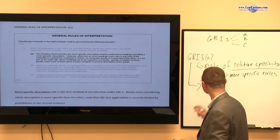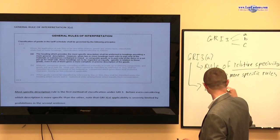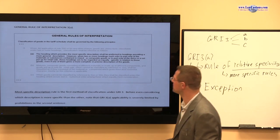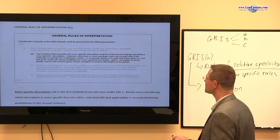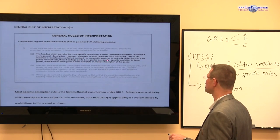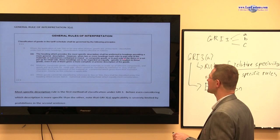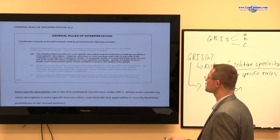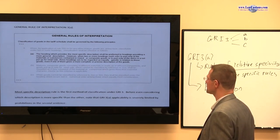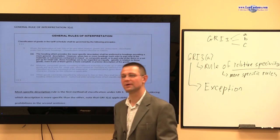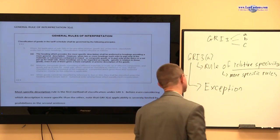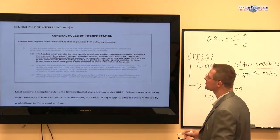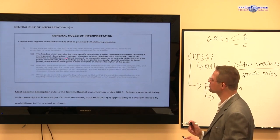So even before you get there, first thing you need to do is to look at the exception. Let's take a look at the exception. When two or more headings refer to a part only of the materials or substances contained in a mixed or composite goods or to part only of items in a set put up for retail sale, for example, those headings are to be regarded equally specific in relation to those goods even if one of them gives more complete or precise description of the goods. So it's just a bunch of phrases - very important ones too. So how do we analyze this, right?